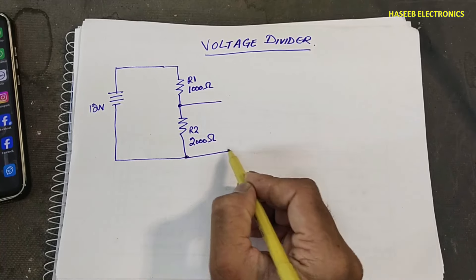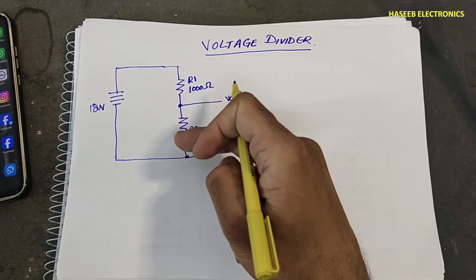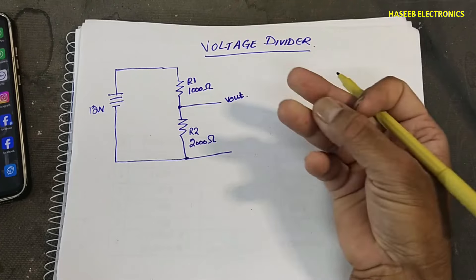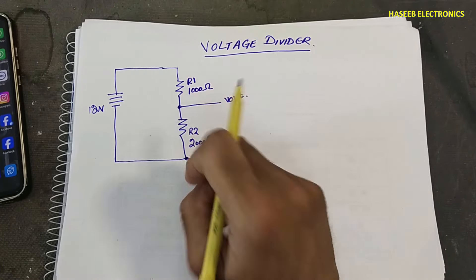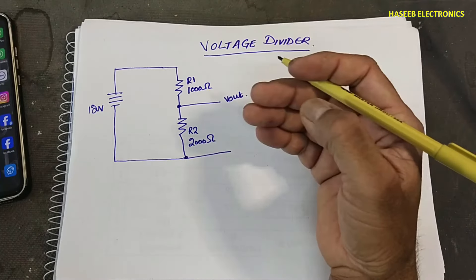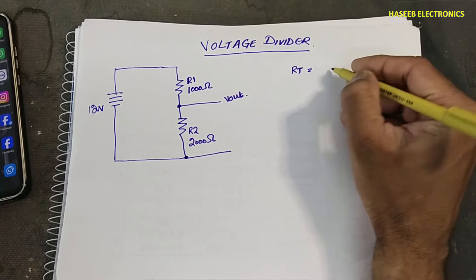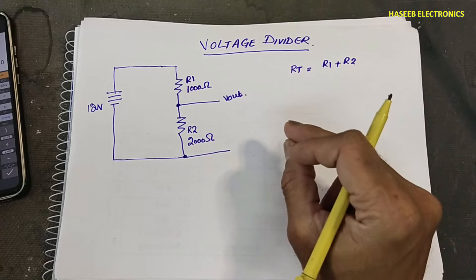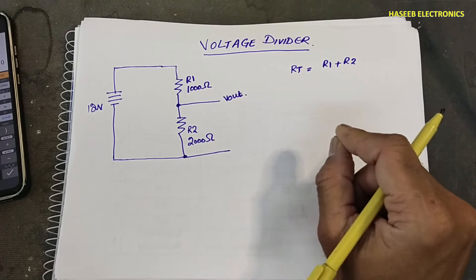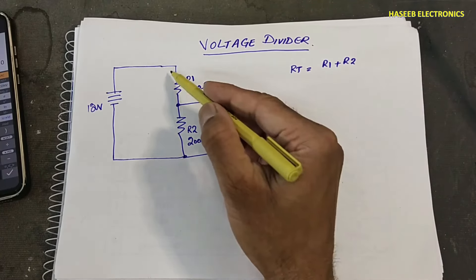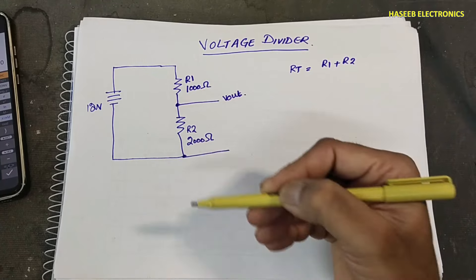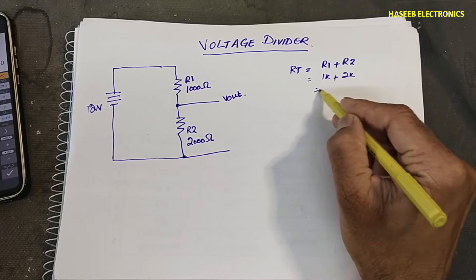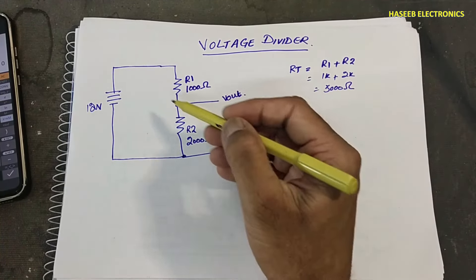We are taking output at these two points. When we connect any component with a battery in a closed circuit, current will flow according to Ohm's law. How much current flows depends on the resistor value. Here we have two resistors; they will be called RT. RT is equal to R1 plus R2. The total resistance is 1k plus 2k, which is 3000 ohms.